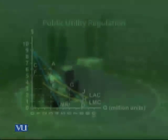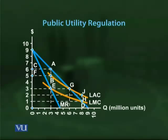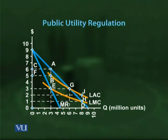Here we notice that price is greater than marginal cost, which means from a social point of view more output is required. The regulatory authority of the government will determine the price at a level where price equals the long-run average cost curve — given by point G in the diagram, where the long-run average cost curve intersects the demand curve. At this point the output will be 6 million units — exactly double what the unregulated monopolist produced.